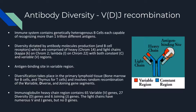Both heavy and light chains contain some regions that are constant and some regions that are variable. Variable regions differ between antibodies. The antigen binding site on antibodies, circled in the image on the right, is a variable region, and this is the reason that antibodies can have specificity to certain antigens. Diversification of antibodies takes place in the primary lymphoid tissue. This is where random recombination of the variable, diversity, and joining gene segments occurs to form the variable regions of the light and heavy chains of each antibody. These three types of gene segments — variable, diversity, and joining — are often abbreviated as VDJ.